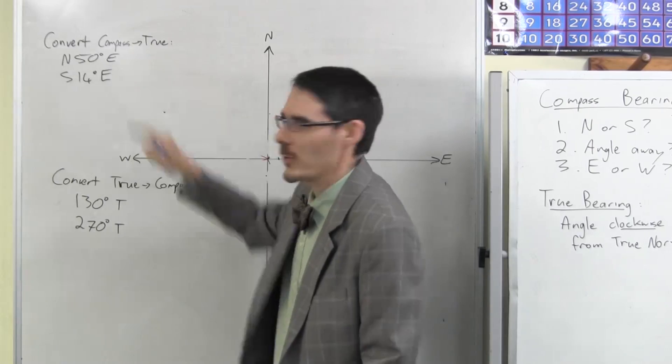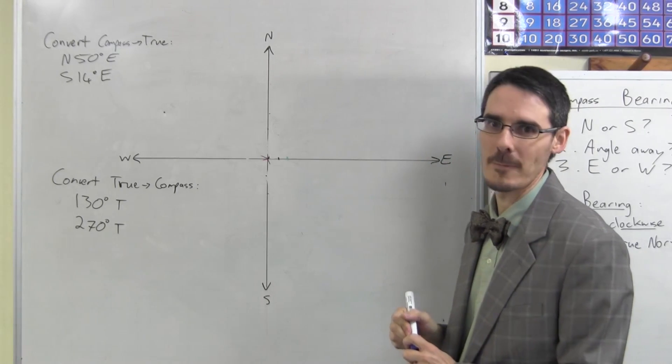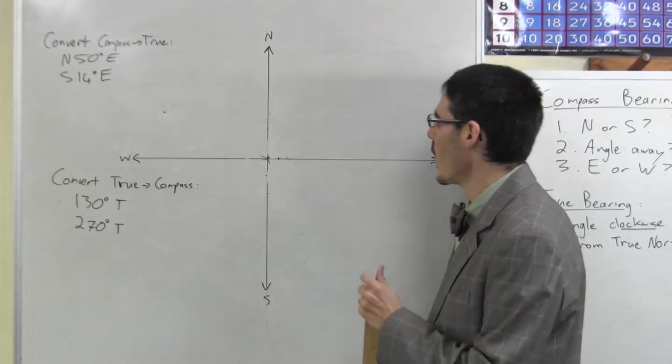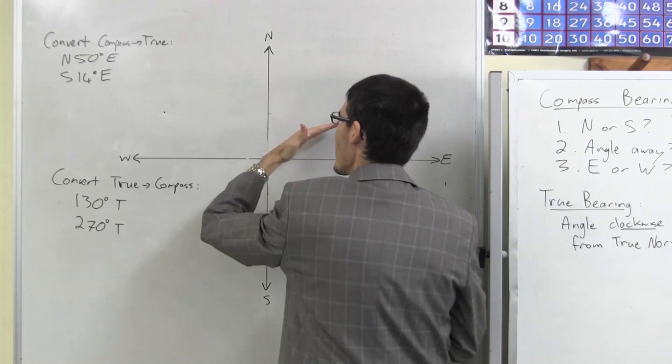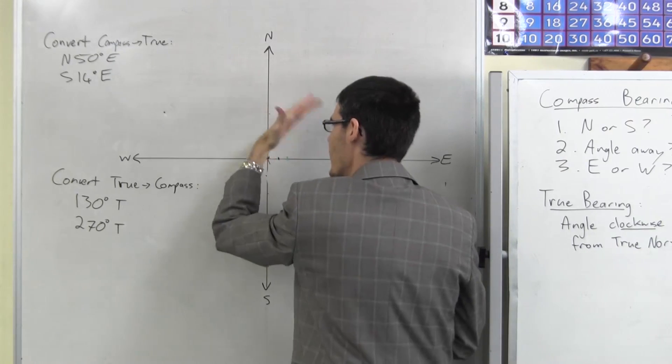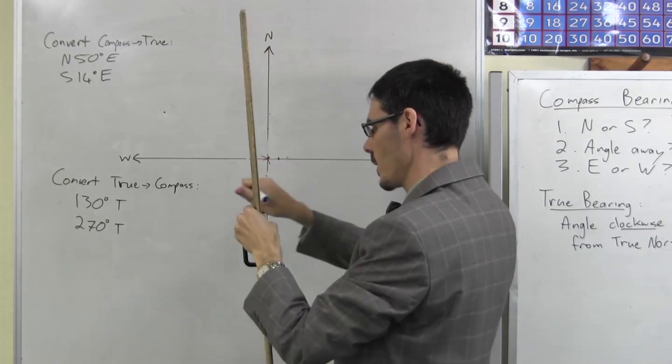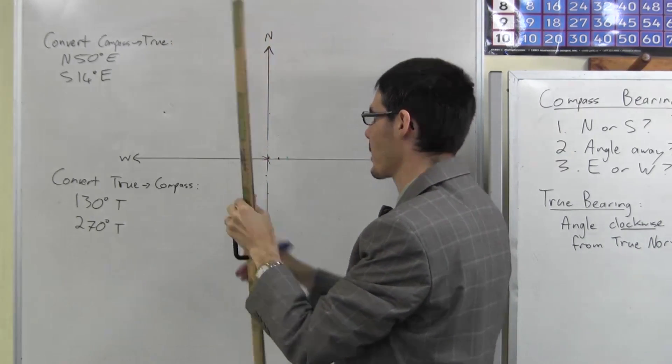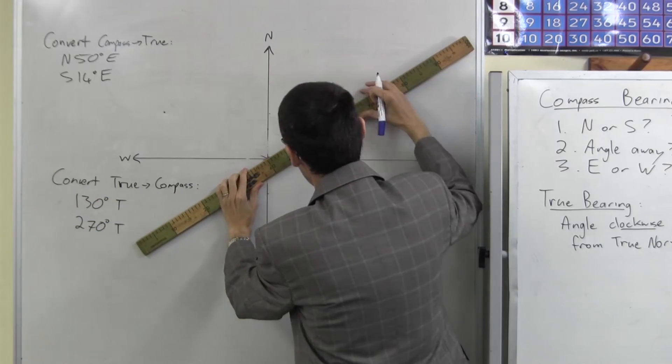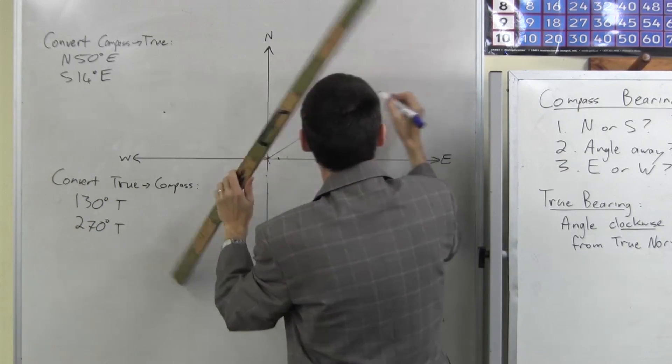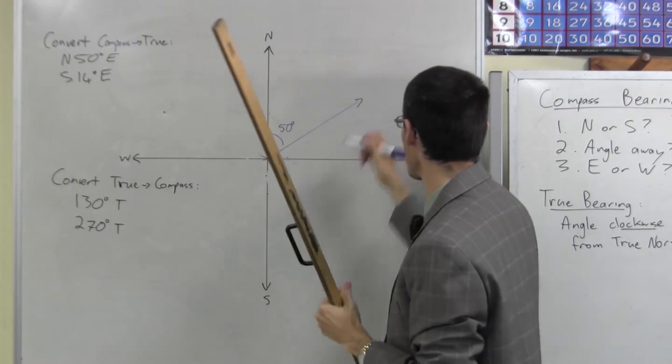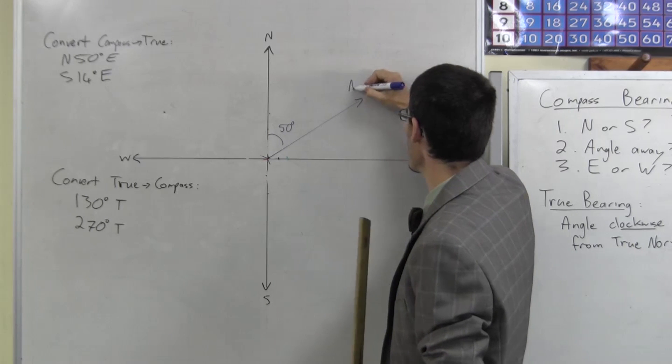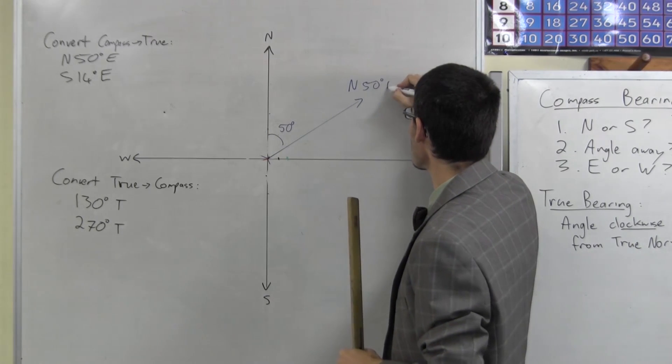Convert north 50 degrees east to a true bearing. I'm looking for north and then 50 degrees away to the east, not the west but the east. So draw that in, north and then 50 degrees away to the east. That was north 50 degrees east.